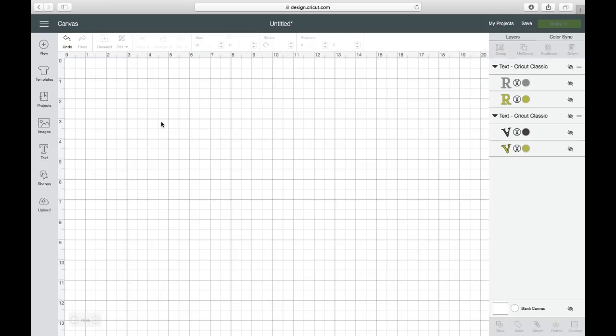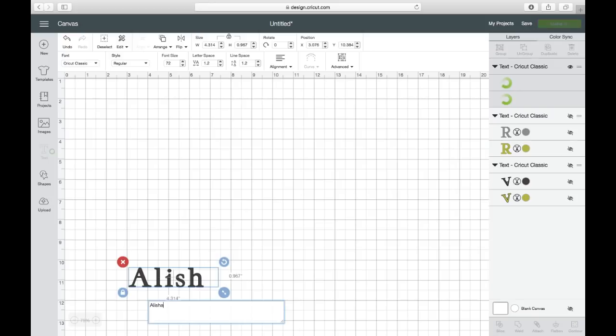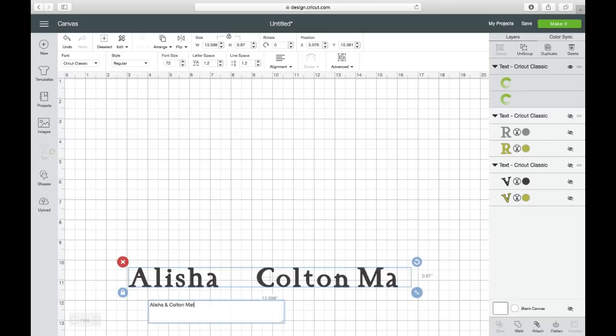I'm super excited about this curved text. Huge shout out to the Cricut Design Team. This curved text is super easy to use. So let's get started. The first thing we're going to do is come over here to the text. You're going to click it like normal, and we're going to type in. So I'm going to type in Alicia and Colton, and then I'm going to put in March 18th, 2018.